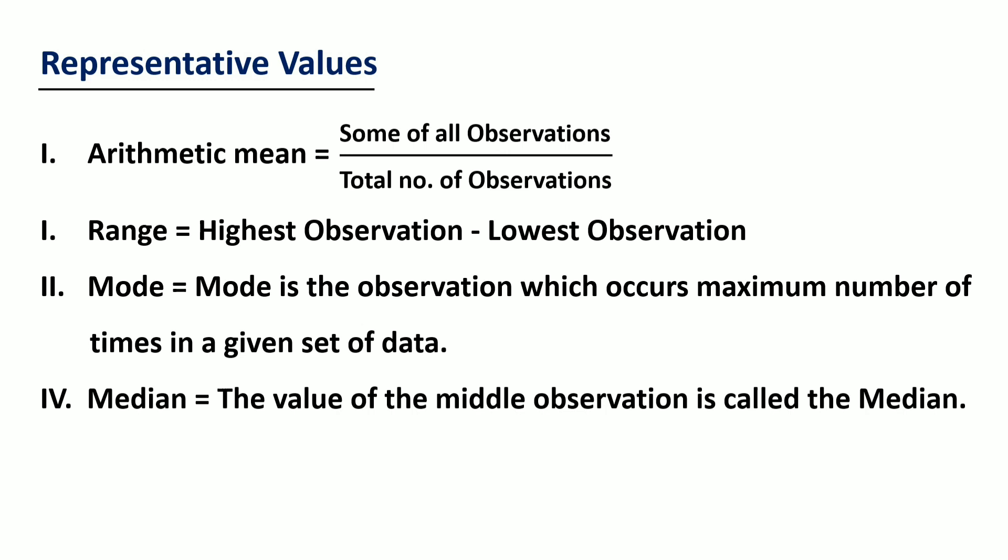The second one is range. Range equals highest observation minus lowest observation. That means the difference between the highest and the lowest values in a given set of data is called its range. For example, the difference between the height of the tallest and the shortest boy of the class.